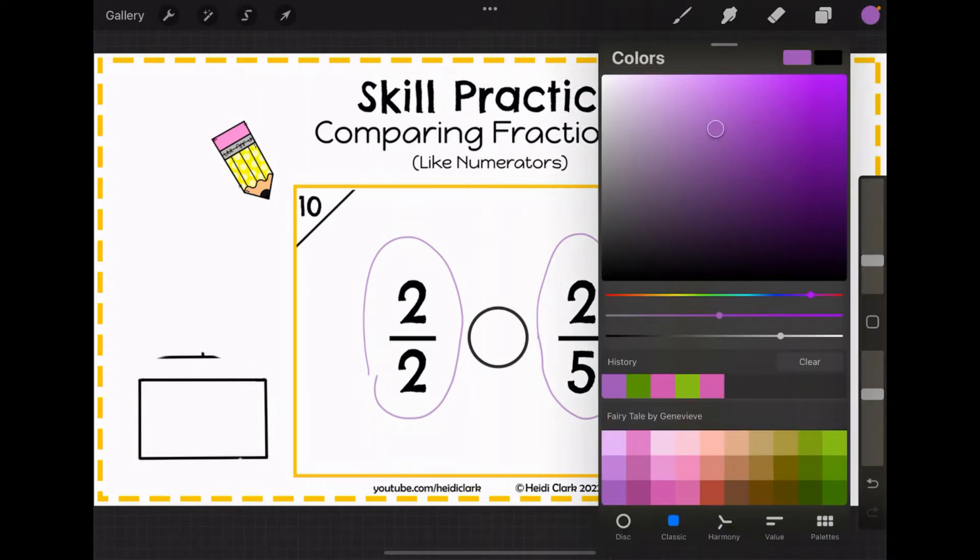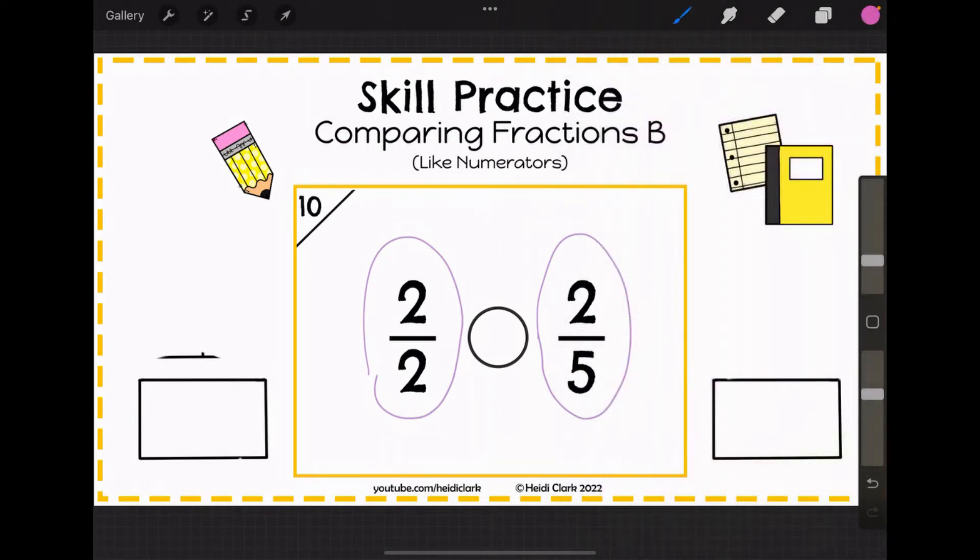So in this case, let's take a look here. On the left with 2 halves, this is our numerator, it's 2, that's the number of pieces you're going to get. On the right, the numerator is also 2, so with 2 fifths you're also getting 2 pieces.